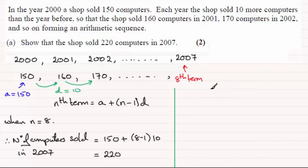You could have said that the first term was 160. If you had said 2001 had a first term of 160, 2002 was 170 computers sold, then you can see that as we build our way up to 2007, and we're trying to find this value here. This will be the 7th term.